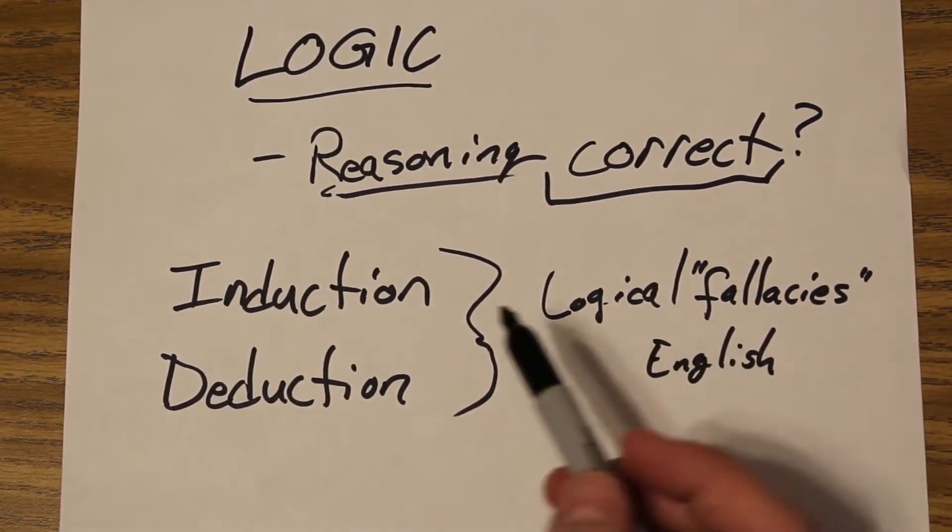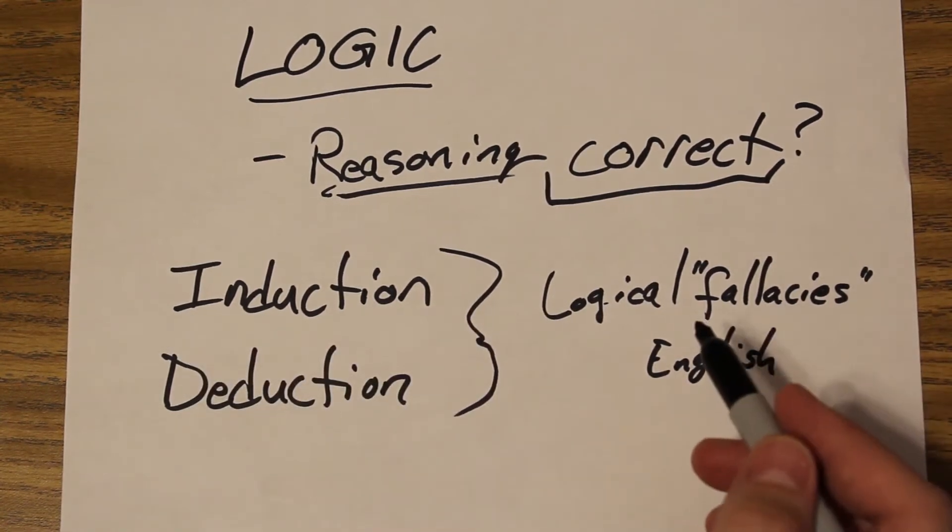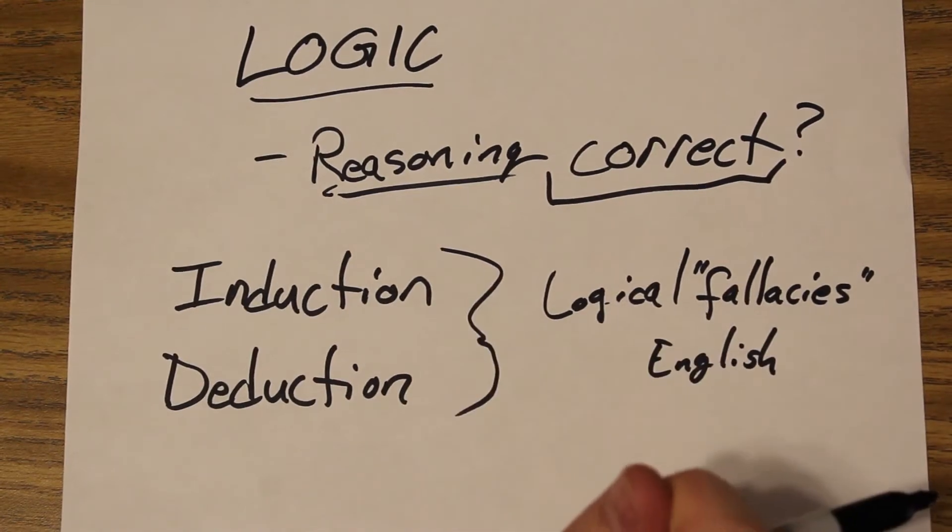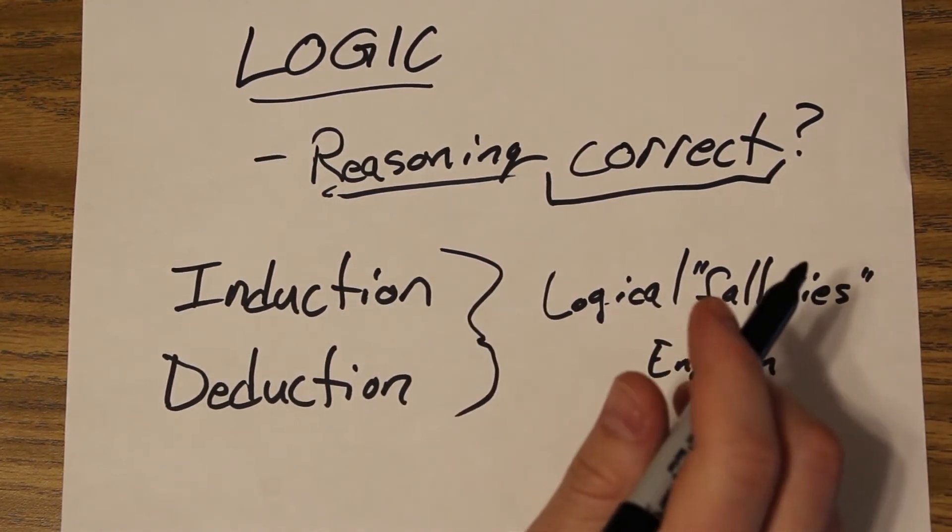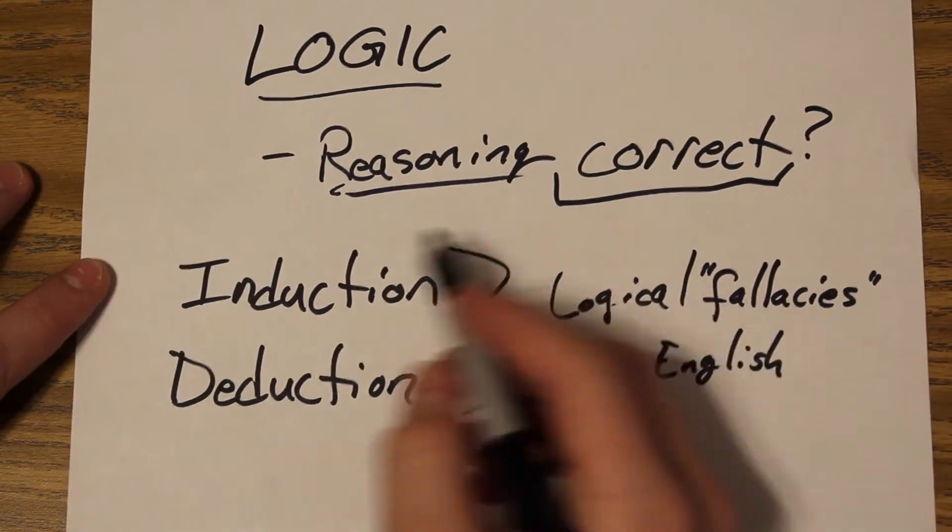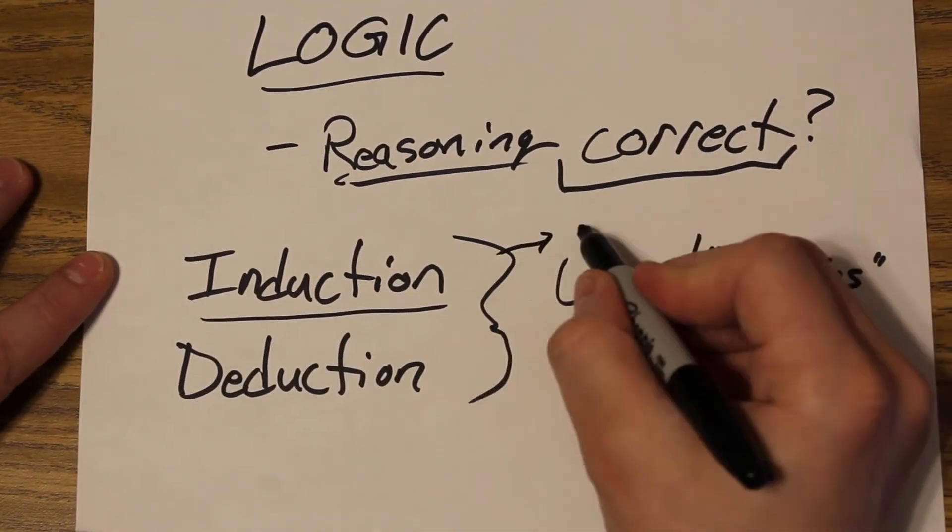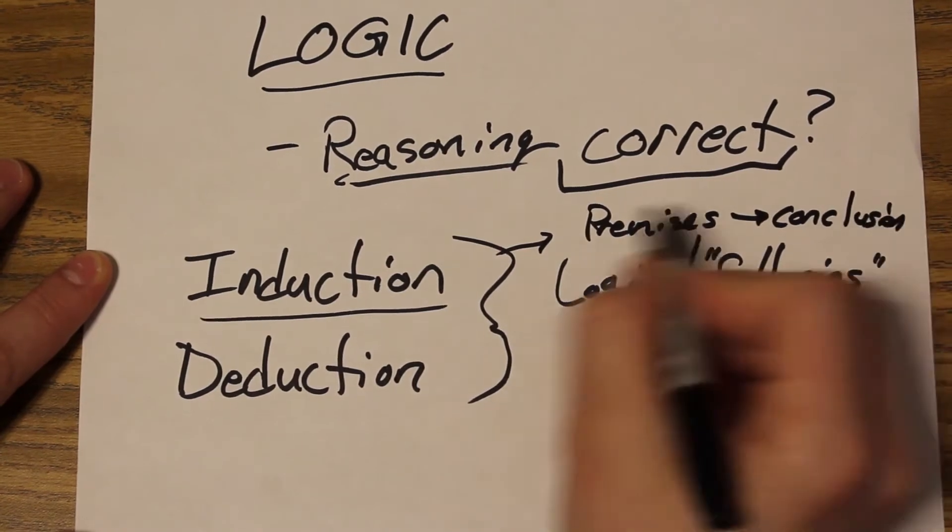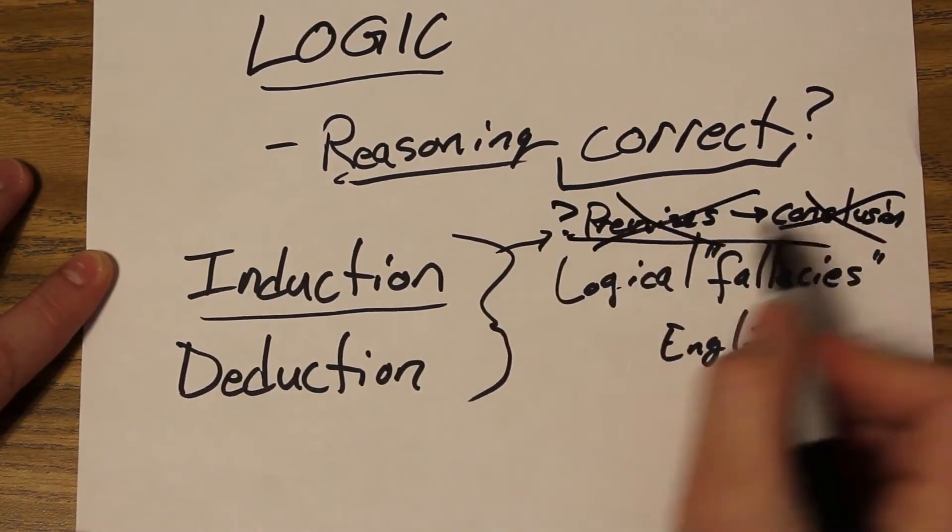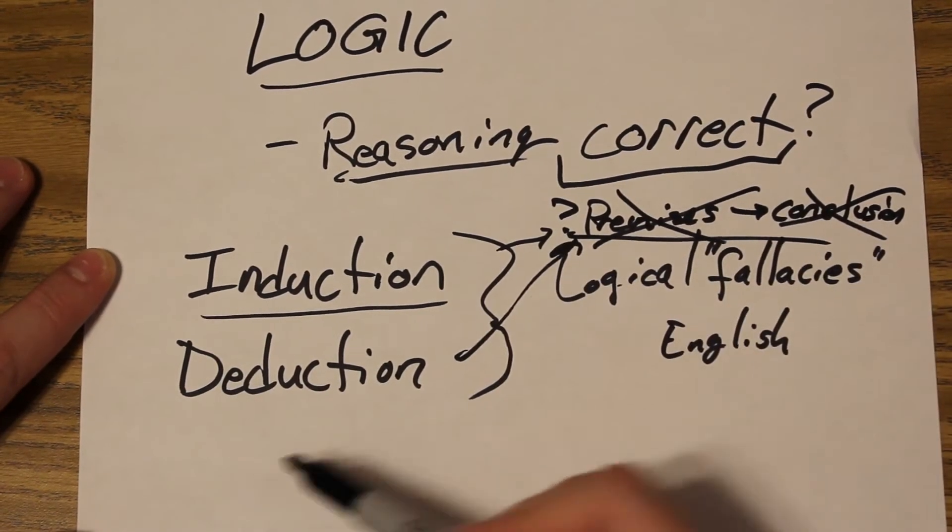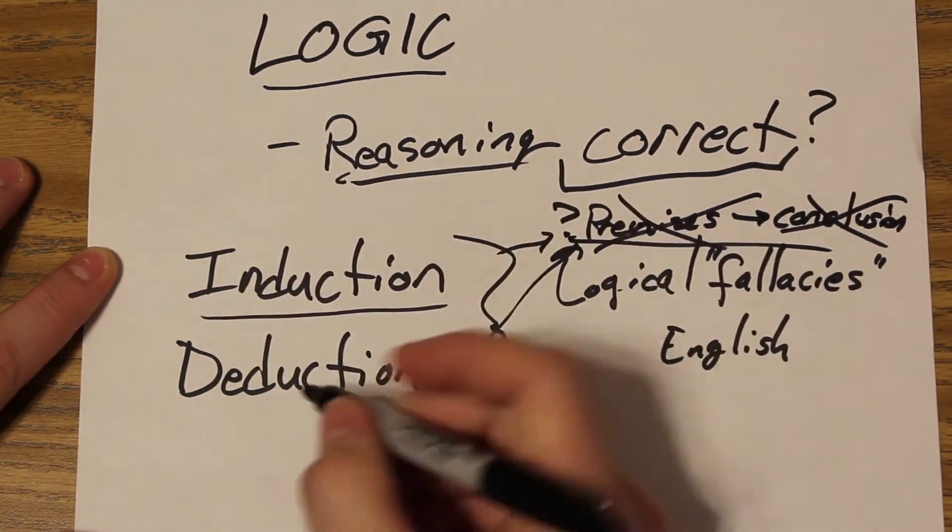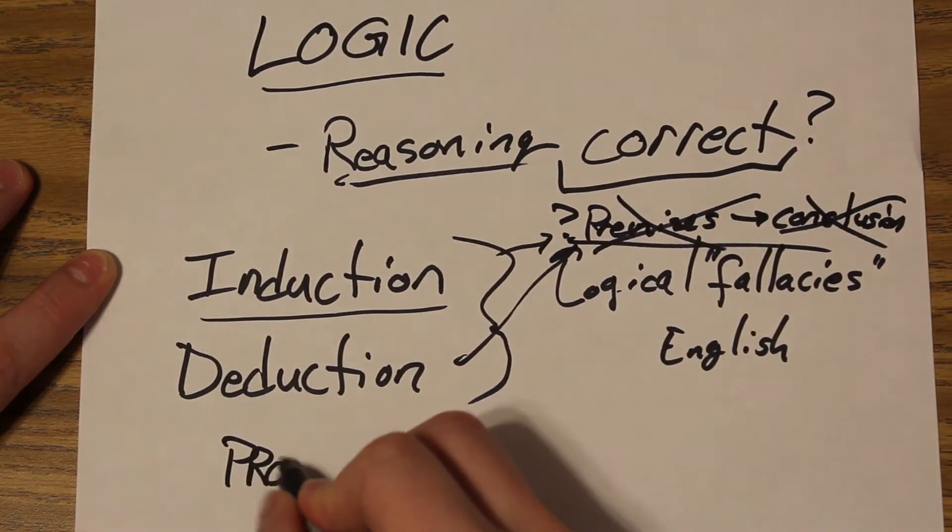But the way induction and deduction are described using English or using a language, they just tend to be really wordy. And they'll say things like, from premises to a conclusion is induction. And while that can be true in a sense, deduction also tends to fit that. Because deduction goes from premise to conclusion. It's just that deduction is usually a singular premise to conclusion. So what is our difference?